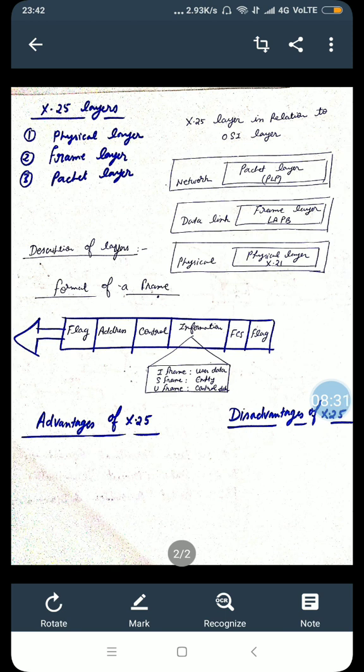One more limitation is there that X.25 has given way to other technologies for WAN like frame relay and ATM, asynchronous transfer mode. X.25 was designed for private use not for the internet.